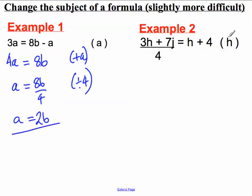Example 2. 3h plus 7j all divided by 4 equals h plus 4. I want to make h the subject of the formula. There's a h here and 3h's here plus 7j all over 4. The problem is there's a h on both sides.